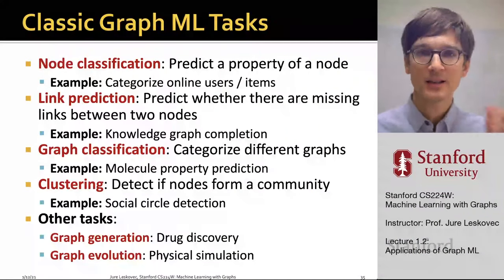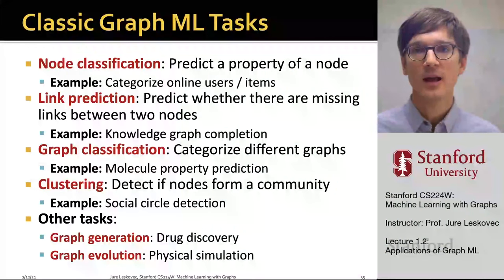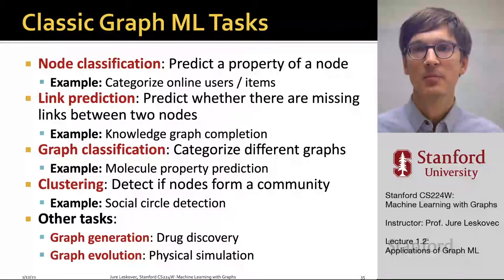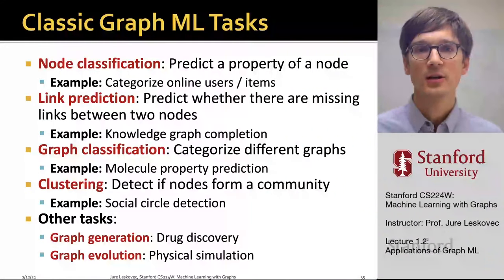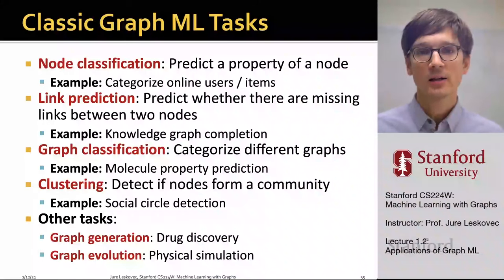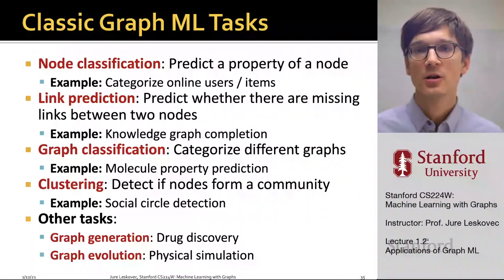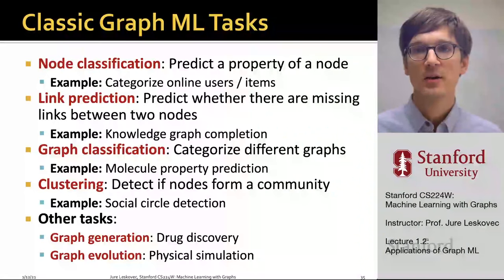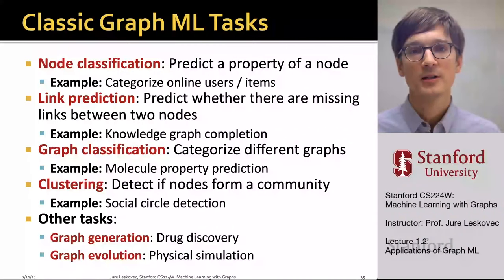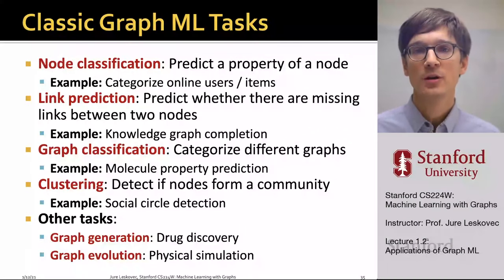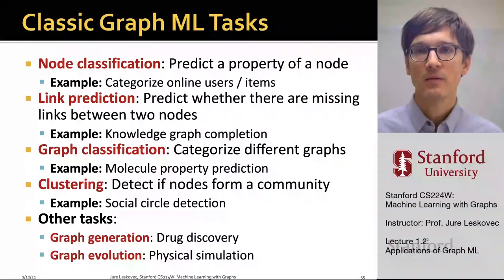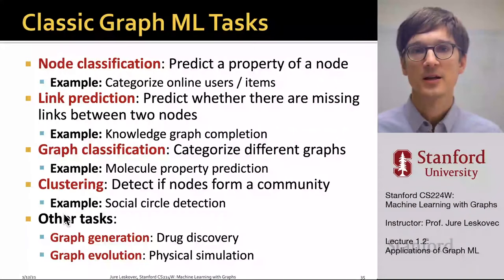We can also perform clustering or community detection, where the goal is to identify closely-knit sub-parts of the graph where nodes are densely connected with each other. An application of this could be social circle detection. There are also other types of tasks, for example graph generation or graph evolution. Graph generation could be used for drug discovery to generate novel molecular structures, and predicting graph evolution is very useful in physics where we want to run accurate simulations of various kinds of physics phenomena, represented as a graph.